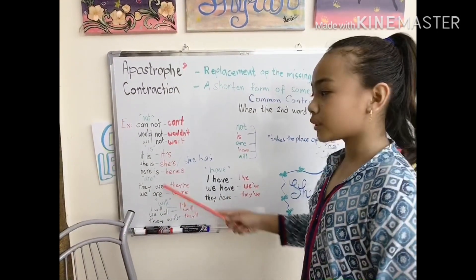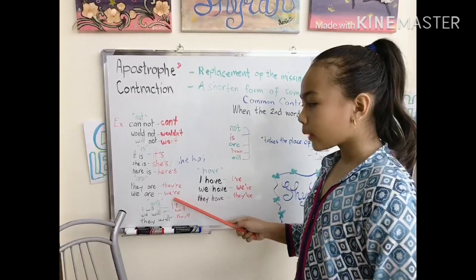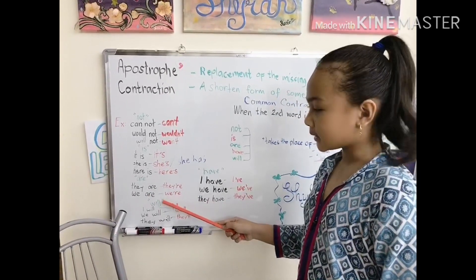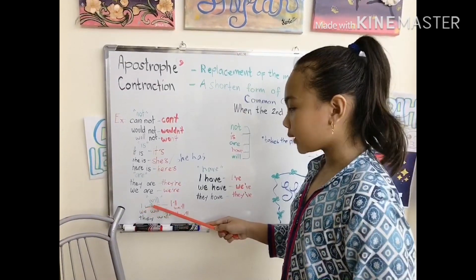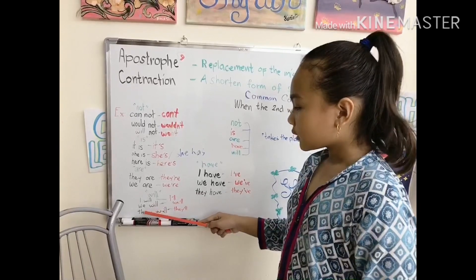Now the second word are. They are becomes they're. We are becomes we're. Now next is will. The second word will. I will becomes I'll. We will becomes we'll. They will becomes they'll.